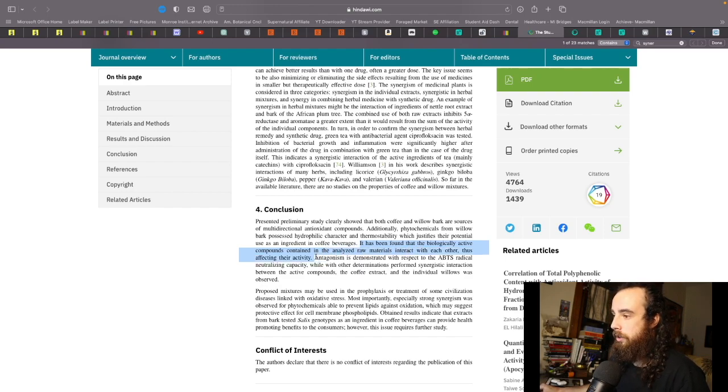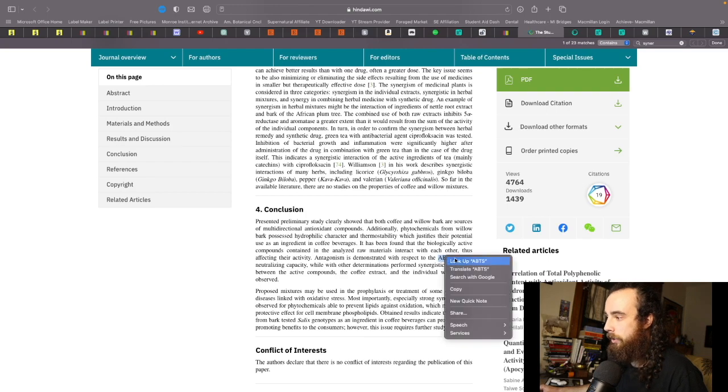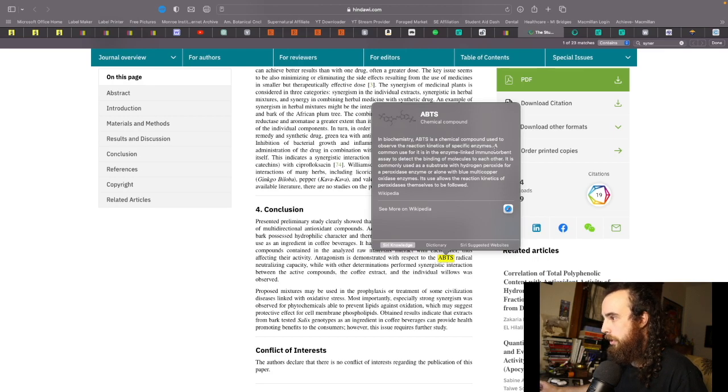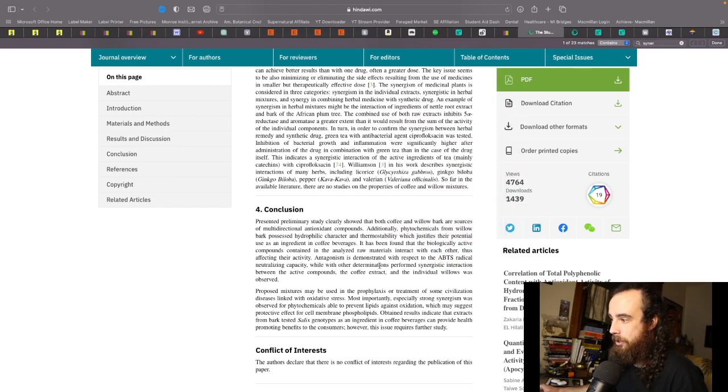It has been found that the biologically active compounds contained in analyzed raw materials interact with each other, thus affecting their activity. There was some antagonism with respect to the ABTS radical neutralizing capacity, so there was a little bit of oxidative activity when mixed with coffee. But other determinations performed showed synergistic interaction between the active compounds in the coffee extract and the individual willows was observed. So coffee and willow, white willow together, is a good choice.